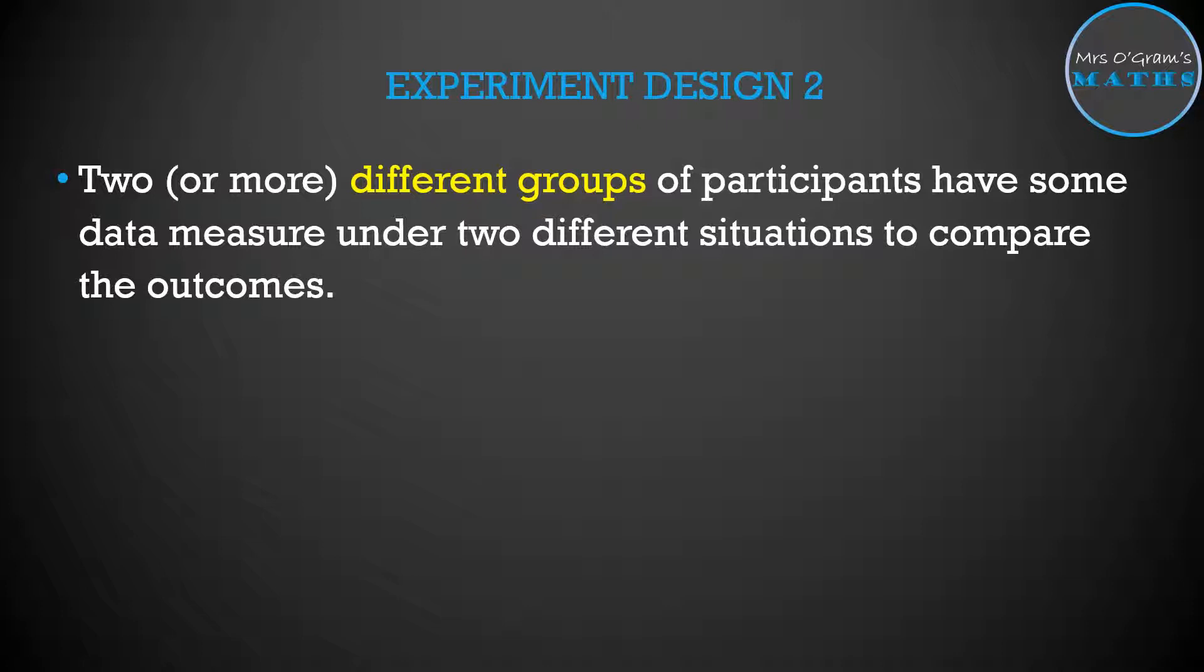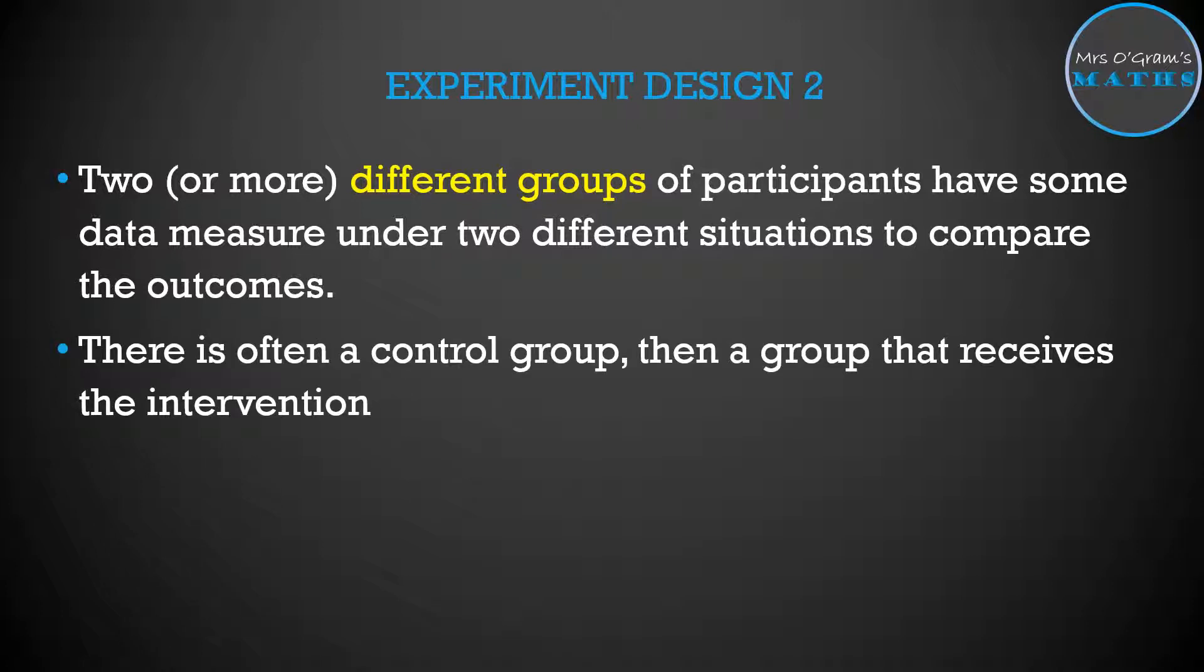The second way you could set up your design for an experiment, and this is often done in things like drug trials, is to have two different groups of participants. They are two completely different people or mice or rats or guinea pigs, whatever it is that you're doing your experiment on. Some kind of data measure that you're going to do on these two different groups under the two different situations to compare their outcomes. This is often referred to as having a control group and then a group that receives the intervention. You study what happens to the control group and you study what happens to the group that's receiving some kind of treatment and you see what the difference is.